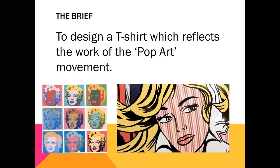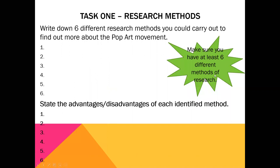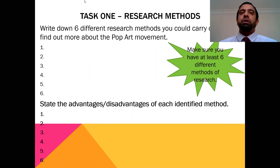The actual task, moving on to the next slide, is this — and you don't need to go to any other slide apart from the first three. Task one is research methods. You're going to write down six different research methods you could carry out to find out more about the pop art movement. So you have to ask yourself: what research methods do I need to do to find out more about the pop art movement?